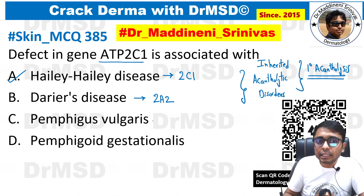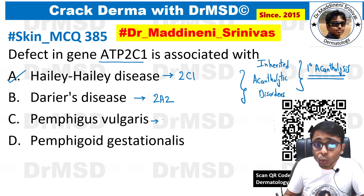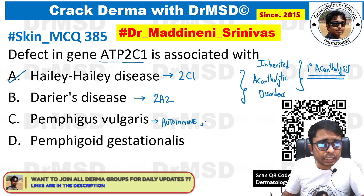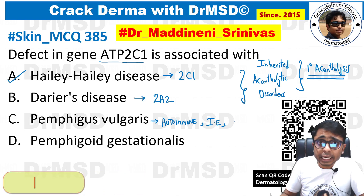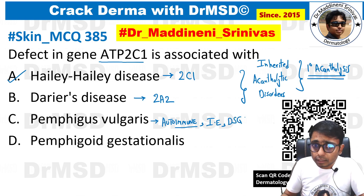Just remember this. For the other options: pemphigus vulgaris is a vesiculobullous disorder, but it comes under the category of autoimmune blistering disorders. It is an intraepidermal blistering disorder. The target antigen in pemphigus vulgaris is desmoglein 3, more commonly than desmoglein 1. This is a component of desmosomes, which help in connecting the keratinocytes with one another.